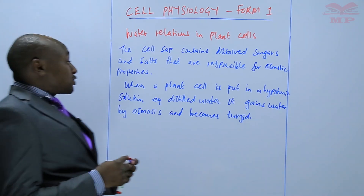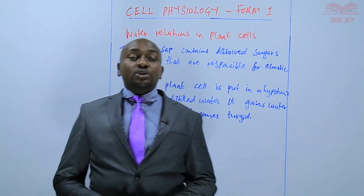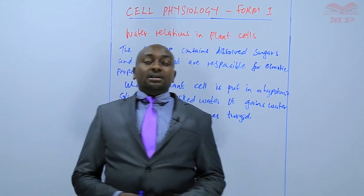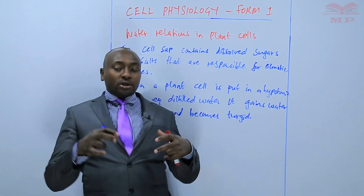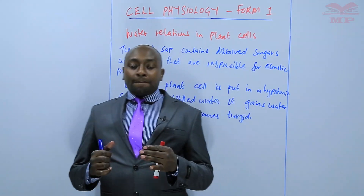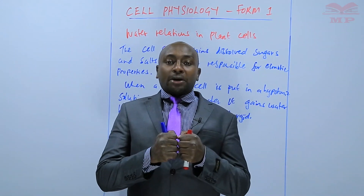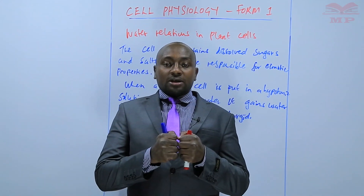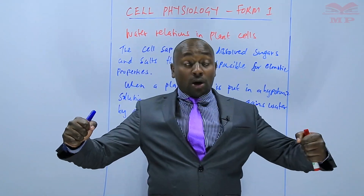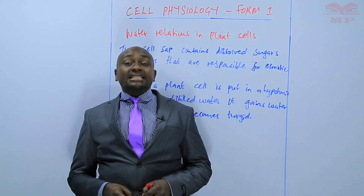Turgid is whereby when water is gained, it gets into the sap vacuole. As more water gets into the sap vacuole, the vacuole develops a pressure that is exerted onto the cell wall. And that is what brings about turgidity.